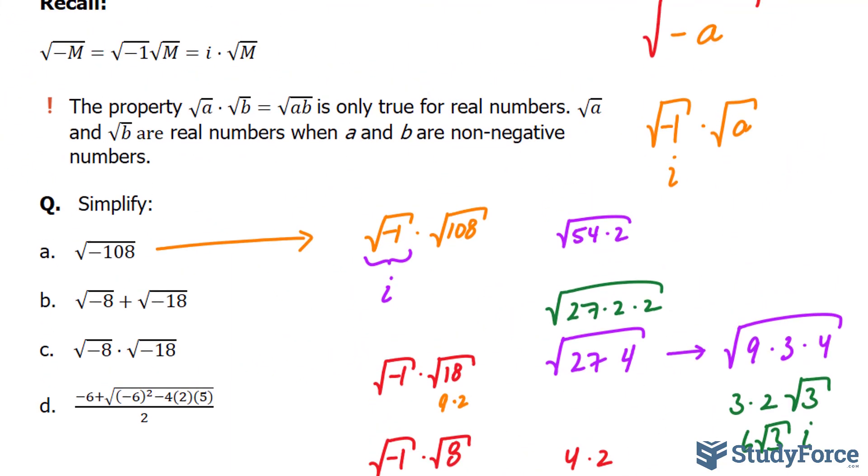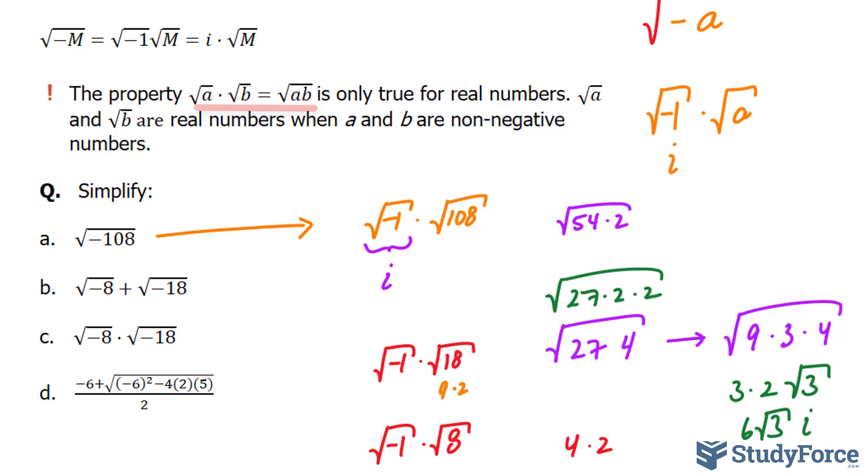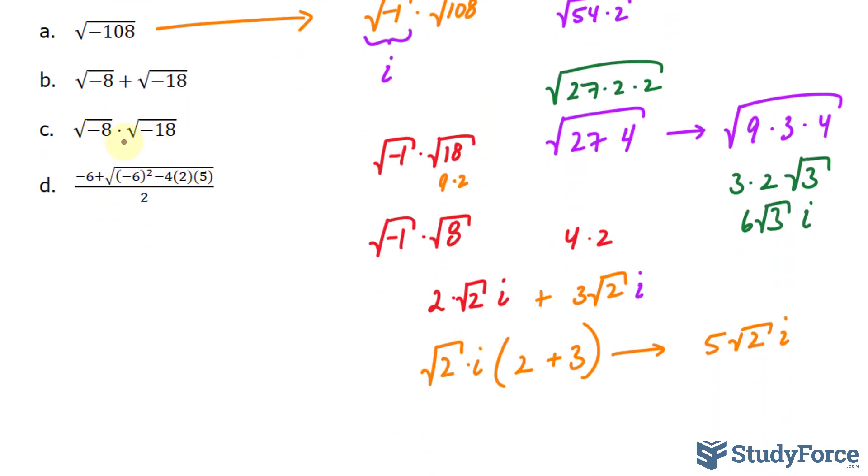For question C, we have to remember what I said up here. So you can't combine the radicands when they're negative. So this part, we know, will break down into 2 times the square root of 2, i. And that, we learned, breaks down into 3, the square root of 2, i.